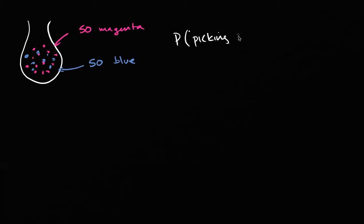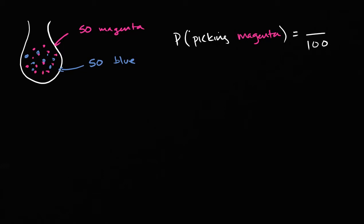I have to feel the need to write the word magenta in magenta. What is the probability of picking a magenta marble? Well, theoretically, there are 100 equally likely possibilities — there are 100 marbles in the bag, and 50 of them involve picking a magenta. So 50 out of 100, which is the same as a one-half probability. If these are 100 equally likely possibilities, 50 of them are picking magenta.